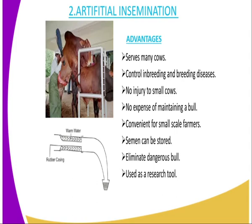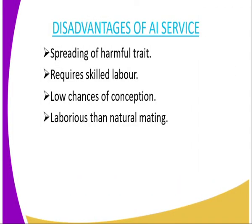Then we have the disadvantages of AI service. The first one is spreading of harmful traits — undesirable characteristics can be transmitted from one superior bull to many animals. It also requires skilled labor or trained personnel such as a veterinarian. There are low chances of conception because the sperm might have died due to poor storage. Also, the farmer must look for heat signs since the bull is not available.